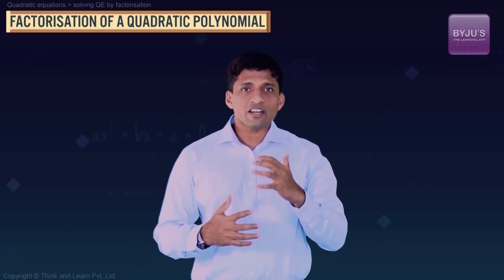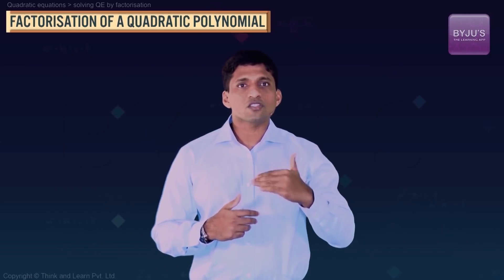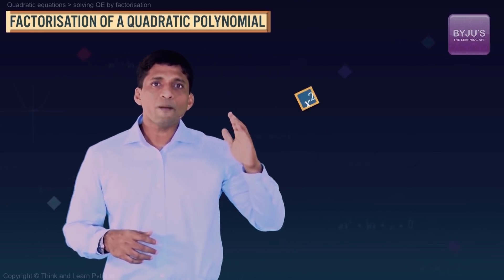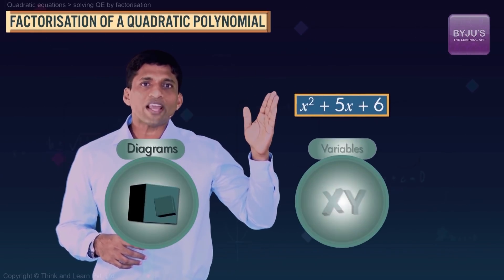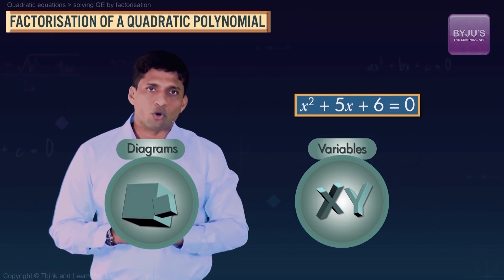Let's visualize factorization of a quadratic polynomial in a diagram. This method can be used to find the roots also. For example, take x² + 5x + 6. When it's an equation, we'll make it equal to zero.